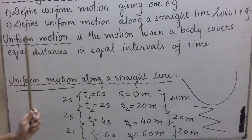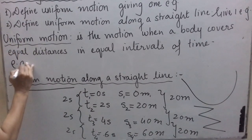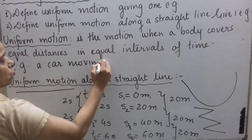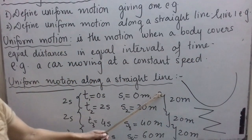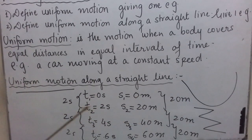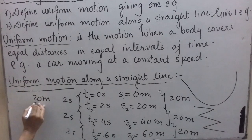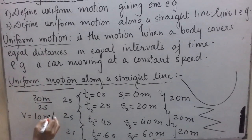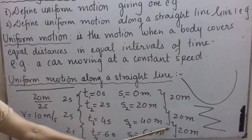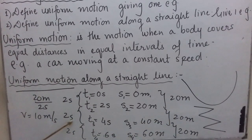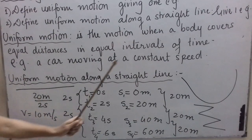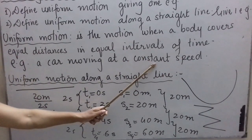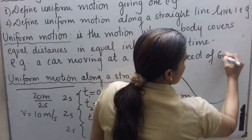An example of uniform motion is a car moving at a constant speed — say 60 km per hour. When equal distances are covered in equal intervals of time, the speed is constant. Here, 20 meters in every 2 seconds gives a constant speed of 10 meters per second throughout. So a car moving at a constant speed is in uniform motion.